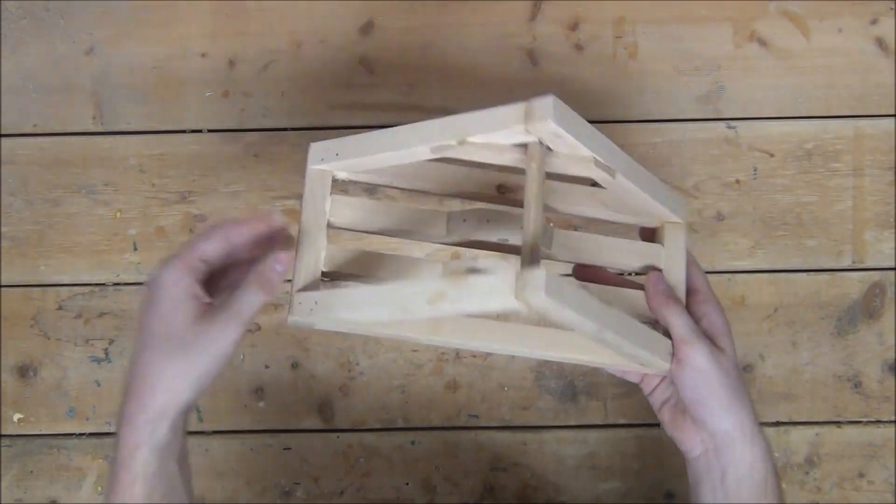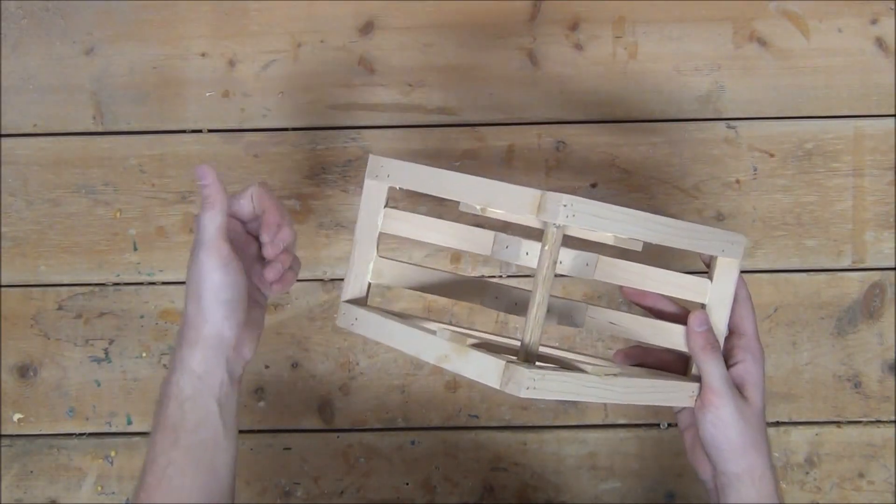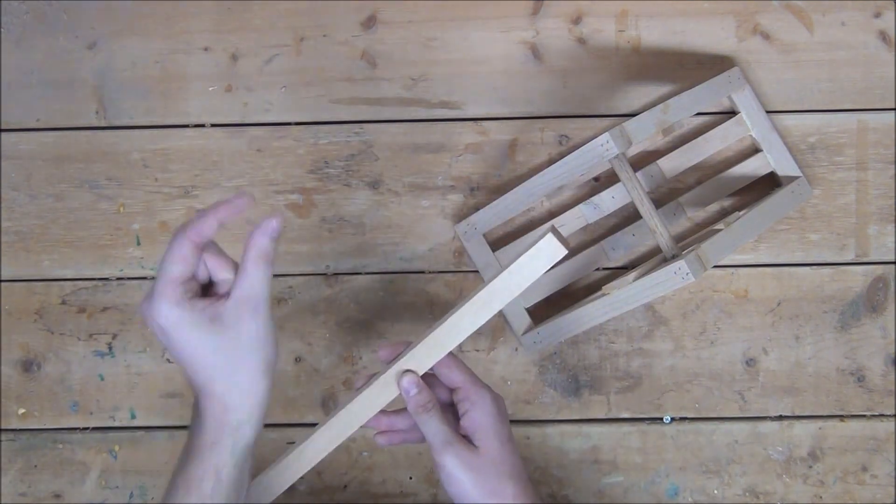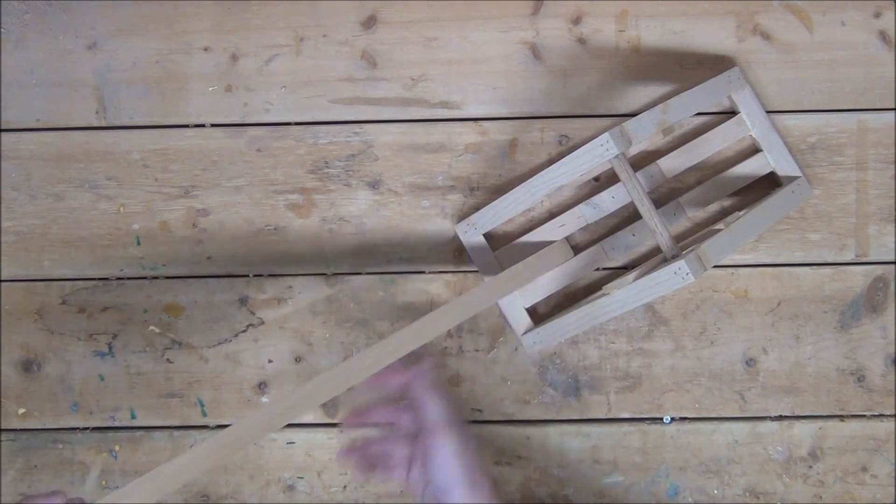With that, the main body of the catapult is now complete and we can move on to the launching arm. For the launching arm, I'm going to take another 3 quarter inch square strip and make sure it fits just a little loosely between the two bottom middle supports.